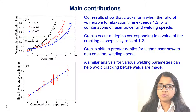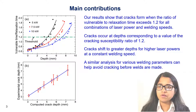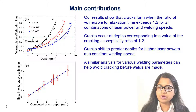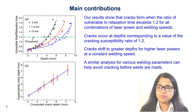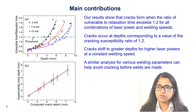Using the methodology adopted in this work, we are able to understand when and where cracks form during high-power keyhole mode laser welding of Inconel 740H. The calculation of the vulnerable to relaxation time ratio for various laser powers and welding speeds shows that cracks form when this ratio exceeds a threshold value of 1.2. Cracks occur at depths which correspond to this ratio of 1.2. Interestingly, following the trend of this ratio, cracks appear at greater depths with increasing laser power at constant welding speed. Using this analysis for various welding parameters, one can identify a process range to avoid formation of cracks before welds are made.